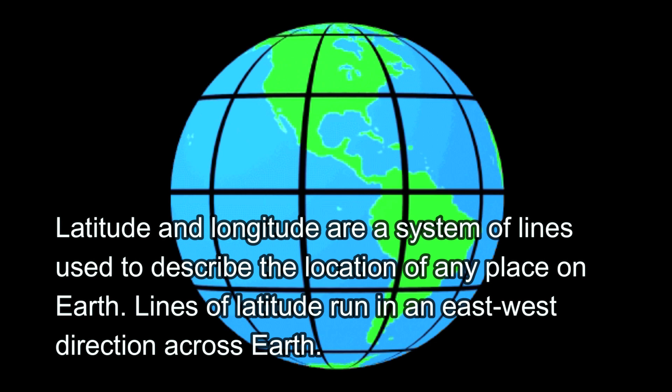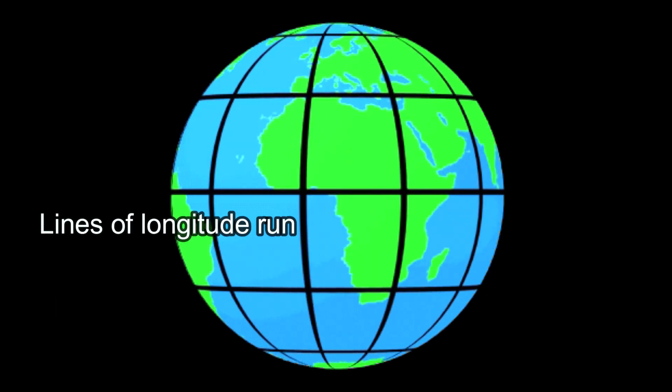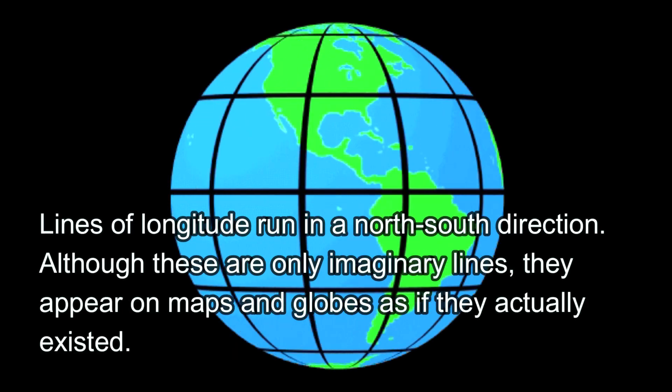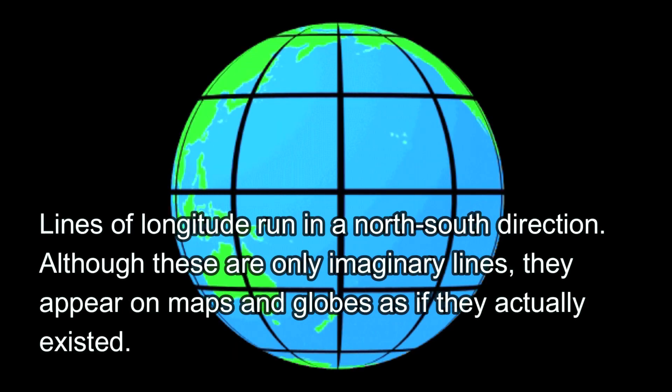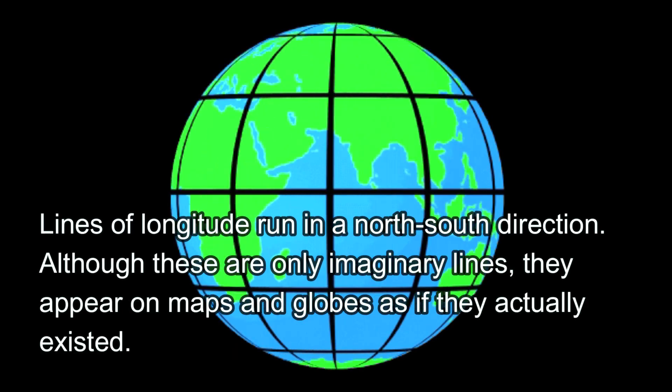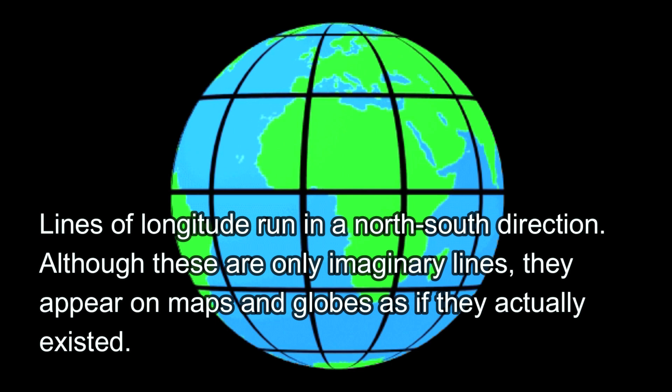Lines of latitude run in the east and west direction across the earth. Lines of longitude run in a north and south direction. Although these are imaginary lines, they appear on maps and globes as if they existed.